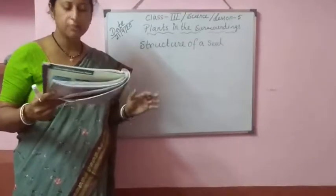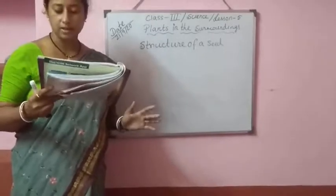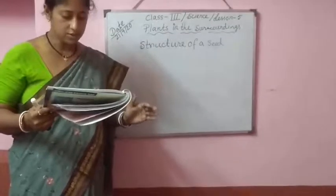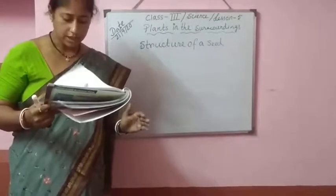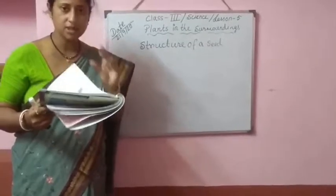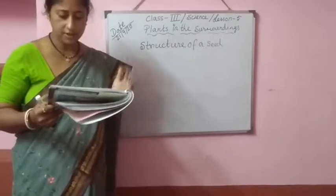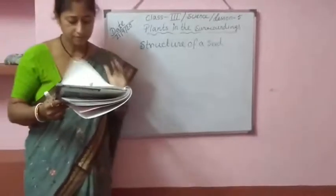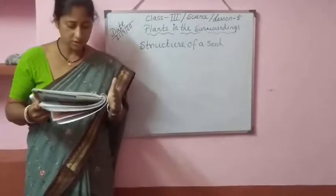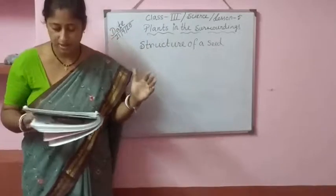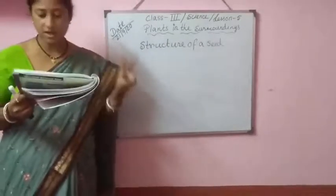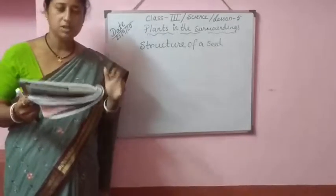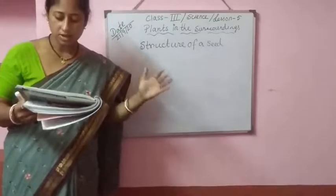All those seeds differ in size, shape, and colour, but they have common parts. These include the seed coat, the embryo — which means the baby plant — and the cotyledons. So there are three parts in the seed: one, the seed coat; second, the embryo, meaning the baby plant; and the cotyledons.